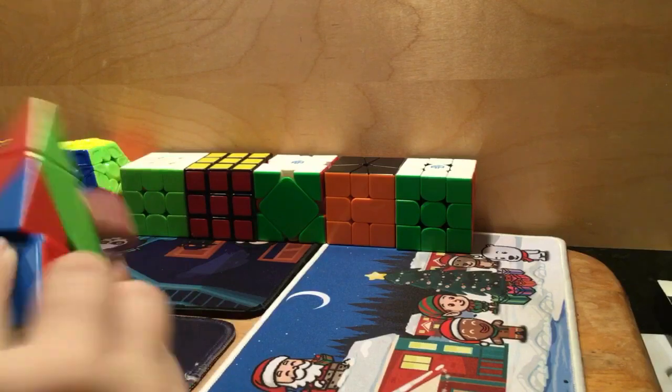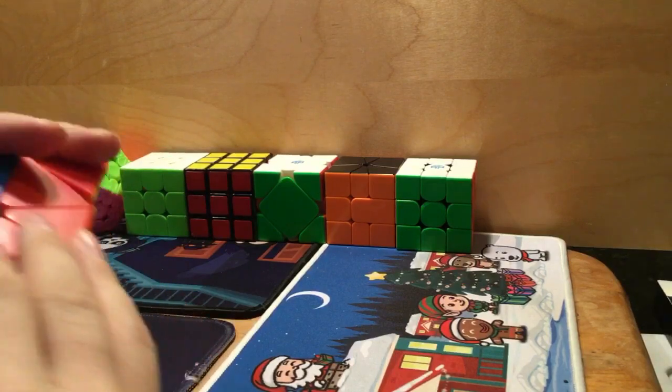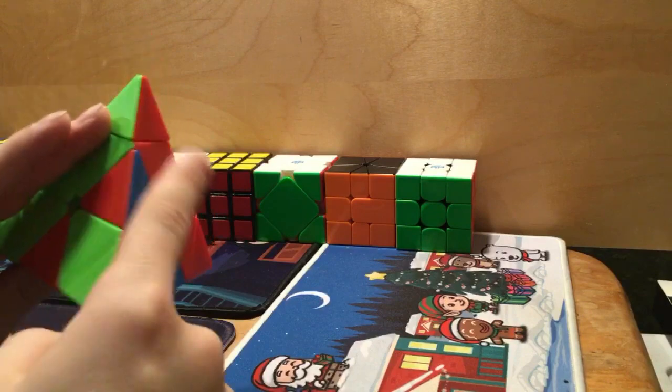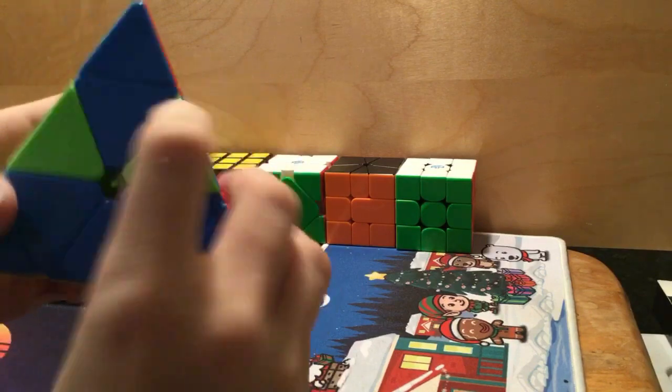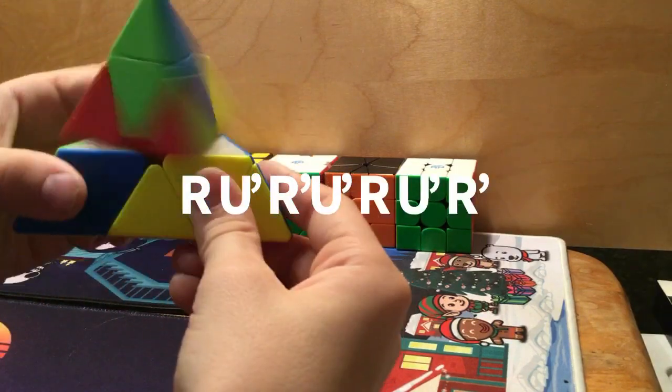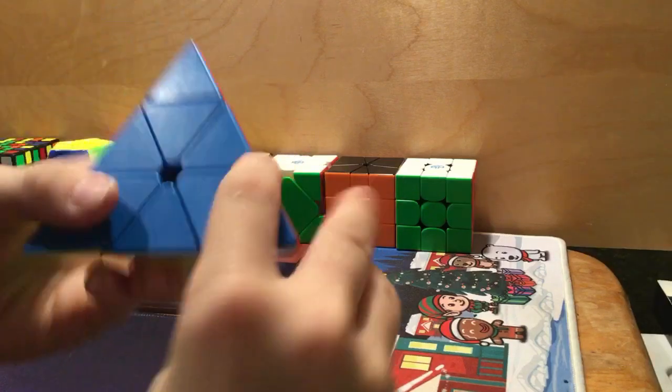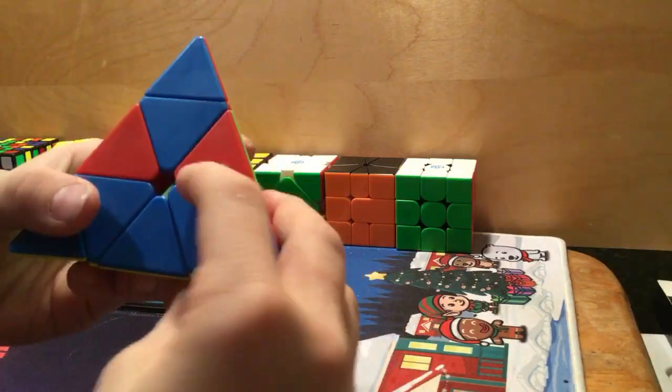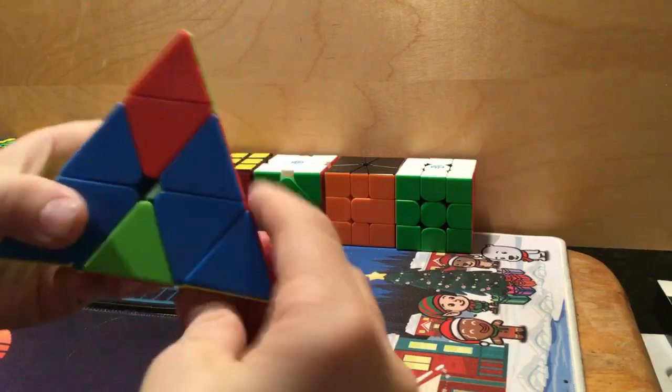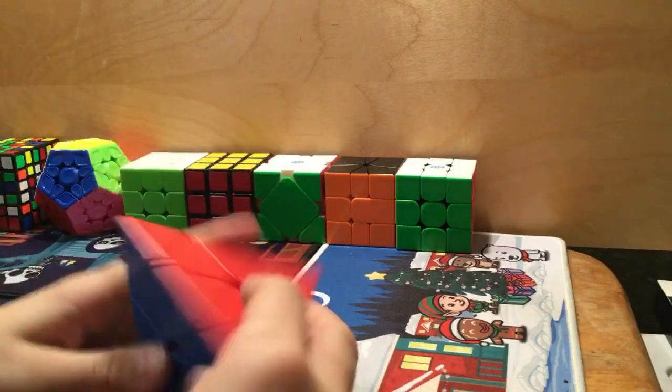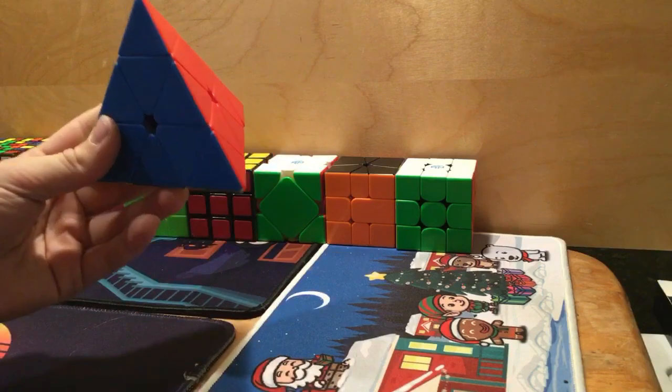And then the reverse of that, where the edges need to go this way. The clockwise edge case, you go like this. That's my favorite case, because you can just do it really fast like that. So that is all of the edge cases for the last layer.